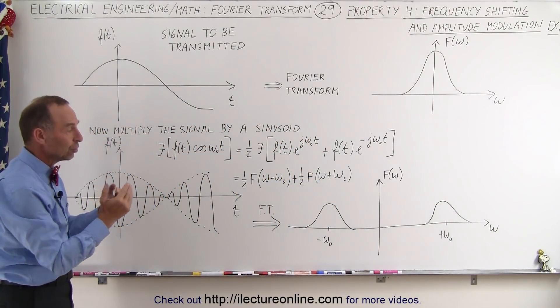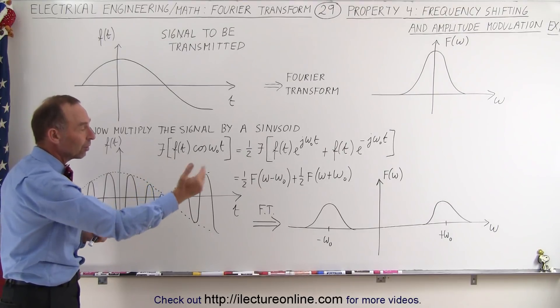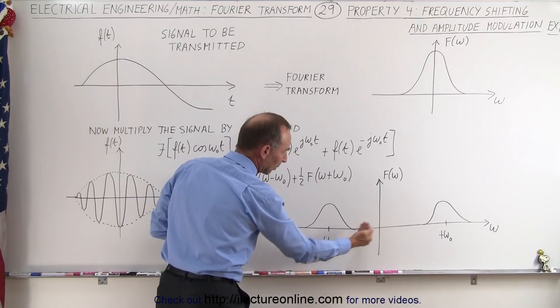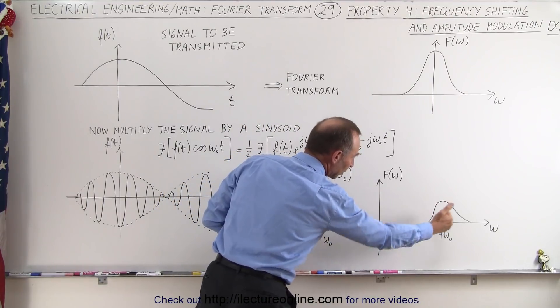Except for half the amplitude, you have two lobes, one on the left, one on the right, both of them shifted by omega, negative omega because shifted left, positive omega because it shifts to the right.